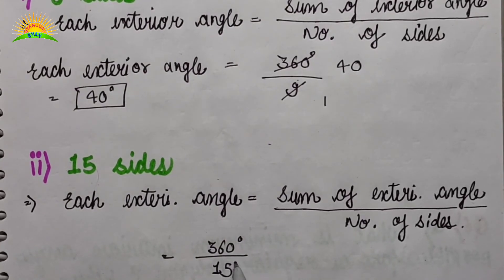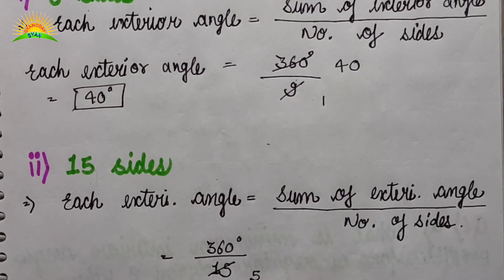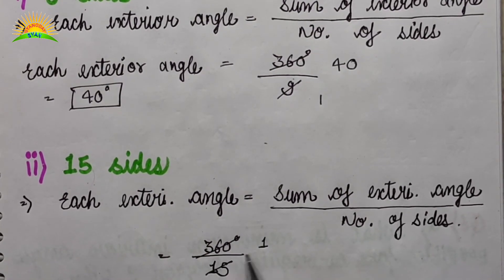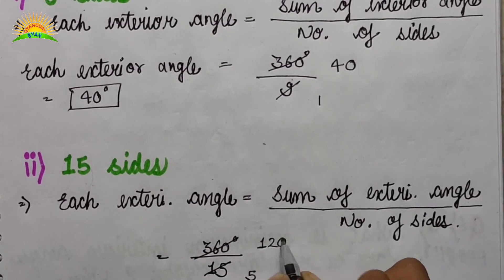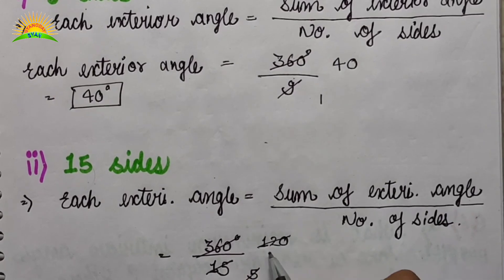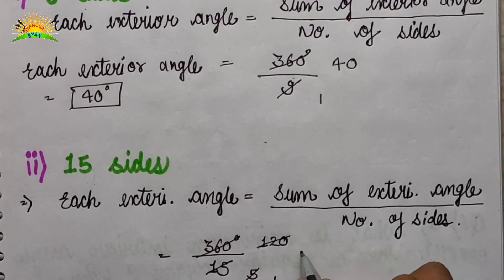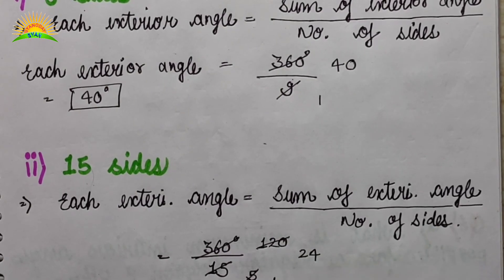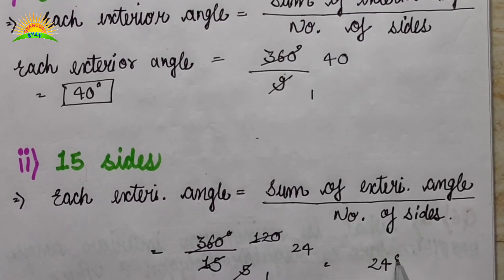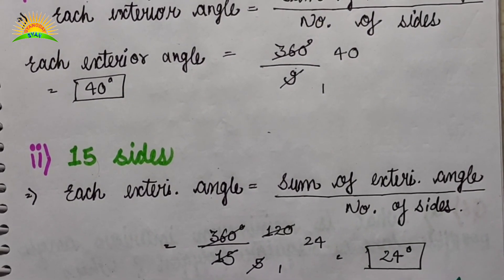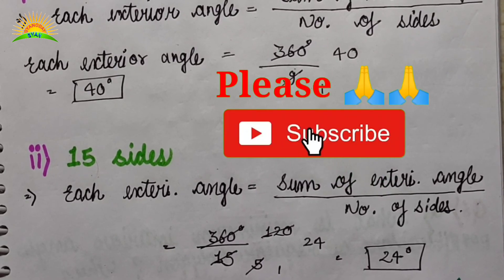We cancel out 360 by 15. First divide by 3: 15 divided by 3 is 5, and 360 divided by 3 is 120. Then divide by 5: 120 divided by 5 is 24. So each exterior angle is equal to 24 degrees. This was the second question of exercise 3.2.